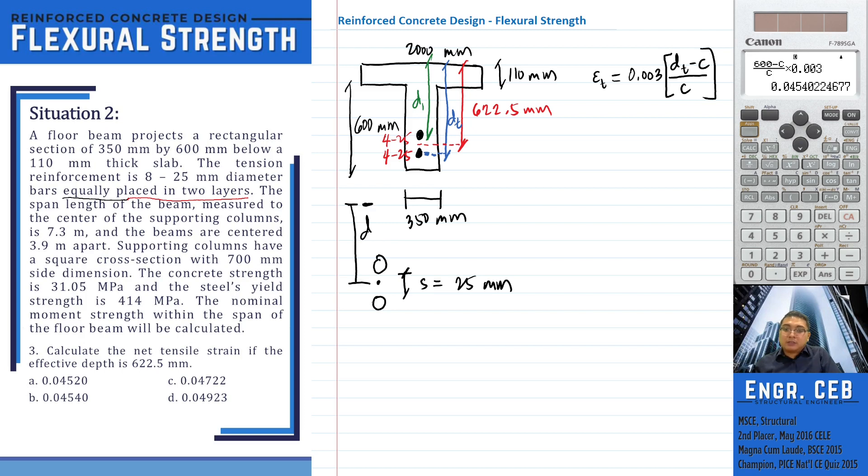So in order to get D sub T, we will add half of 25 millimeters and another half of 25 millimeters to get the distance up to the center of this second layer. So this is now D sub T.